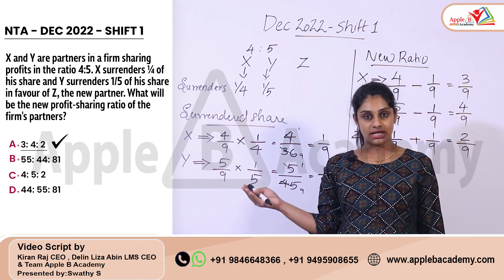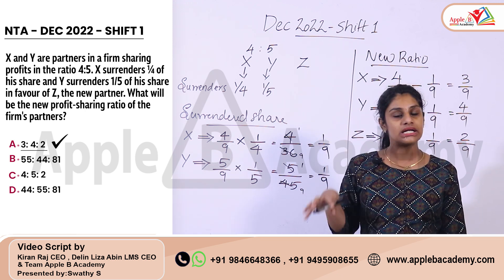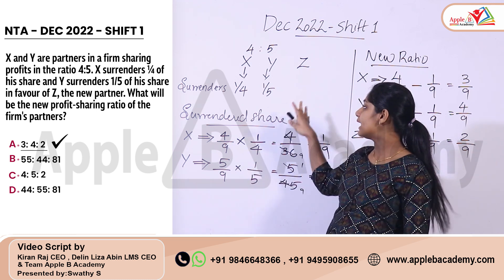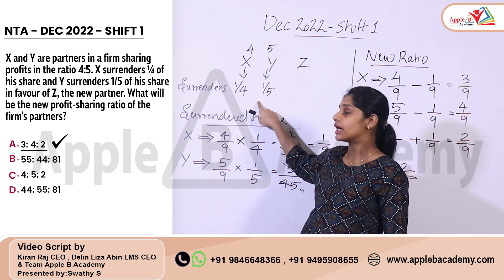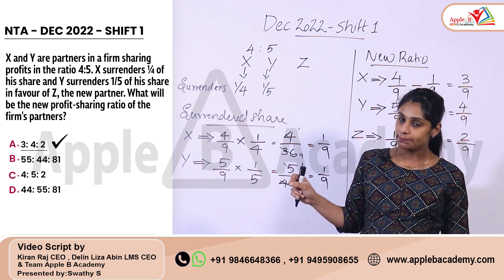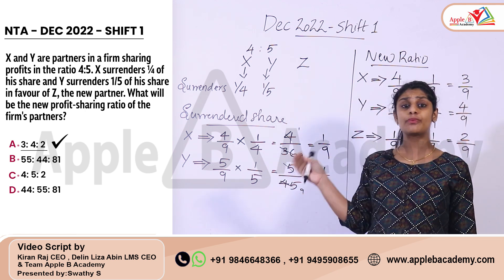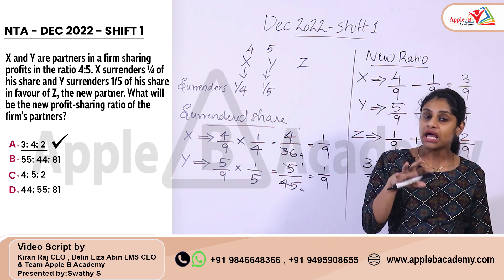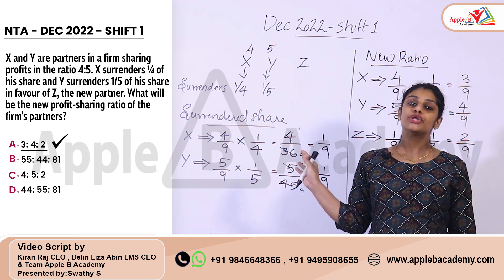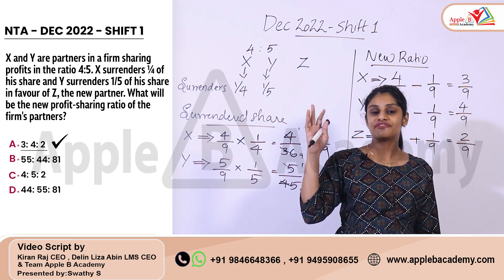To summarize the method: when two old partners have a profit sharing ratio and each surrenders a portion to a new partner, we multiply the old share by the surrendered fraction to get the sacrifice. Then subtract the sacrifice from the old share to get each partner's new share, and add the sacrifices together for Z's share.